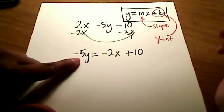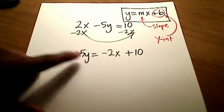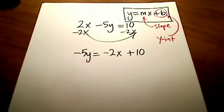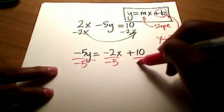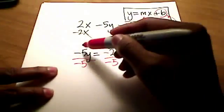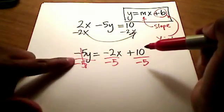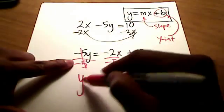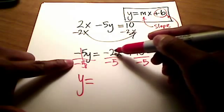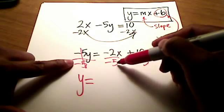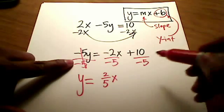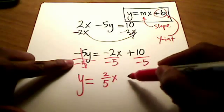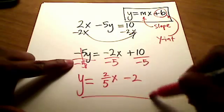Well, I have to do one more thing to get my y completely by itself. I have to get rid of that negative 5. And since negative 5 is being multiplied by y, we're going to divide every term by a negative 5. That now leaves us with a coefficient of 1 in front of the y. And since I have a negative 2 divided by a negative 5, a negative divided by a negative, that's just a positive. So I'll just write it as a positive 2 fifths. And obviously, 10 divided by negative 5 is a negative 2.